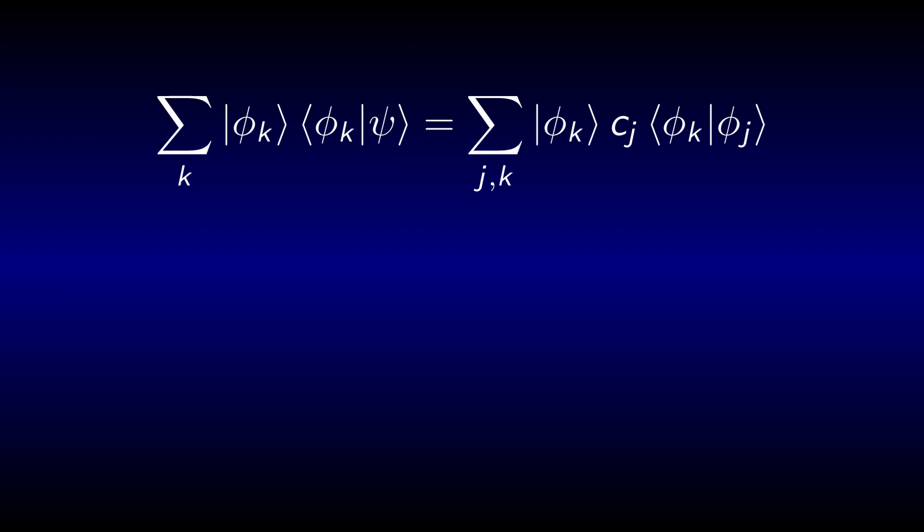Every term of the projector picks its corresponding term in the expression of psi, gaining a pre-factor cj, multiplies it with phi k, and then we get out psi again.